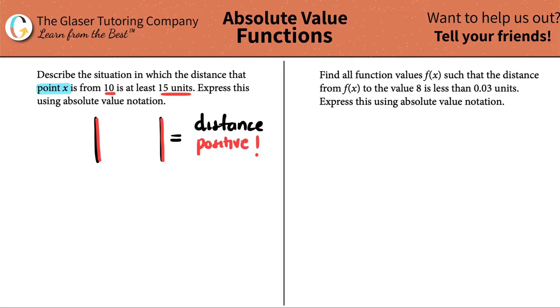So if we read it again, the question said, in which the distance that point x is from 10 is at least 15. So we know that the distance between my number, and in this case my number is 10, the distance between these two, and remember there's two ways, there's a left and a right, the distance has to be at least 15 units. That's my distance.